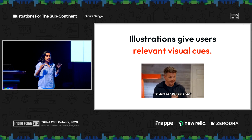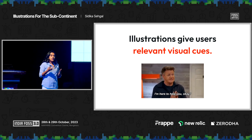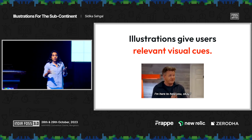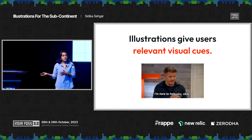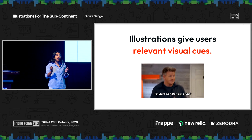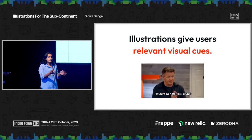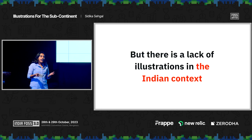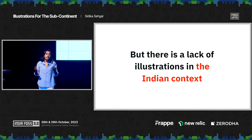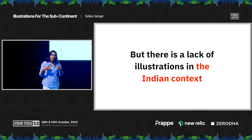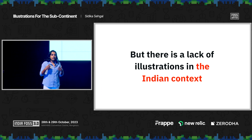That's because illustrations give users relevant visual cues. I've done a lot of work writing microcopy for mobile apps and web apps, and every time I've tested screens with users, the takeaway is that they are not reading the text. They are looking at the visuals, looking at the illustrations to figure out what it is they need to do. And there is a lack of illustrations in the Indian context — if you look at illustration libraries online, you will mostly find people with lighter skin, people wearing western clothes, and these little details really add up.